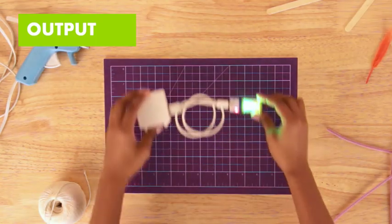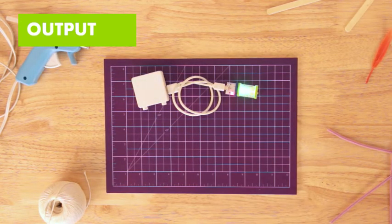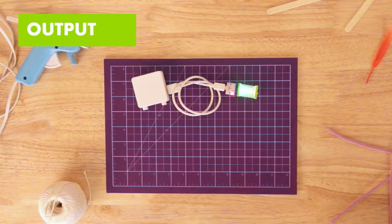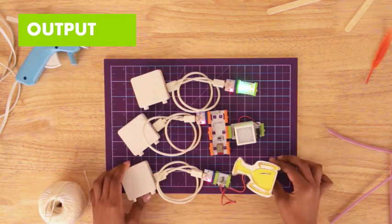Green bits are outputs. They take the signal and use it to do stuff, like light up, make noise, or move.